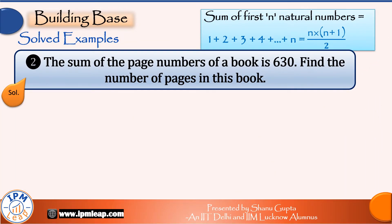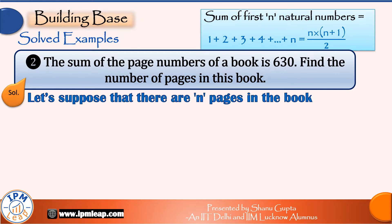Next is a reverse question on the same concept. The sum of the pages of a book is 630. Find the number of pages in this book. So how do we go about this question? Let us suppose that there are n pages in this book. Their sum is 630, that means n(n+1)/2 = 630.